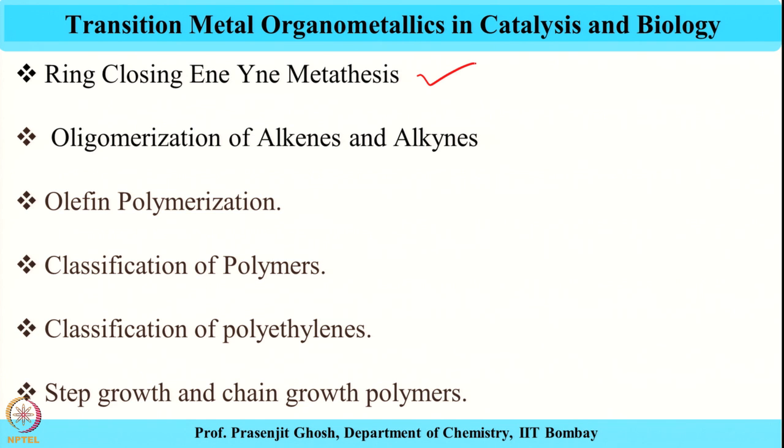We then looked into oligomerizations of alkynes, alkenes, and alkynes, including the SHOP (Shell Higher Olefin Process) catalysis. The development of the SHOP catalyst addressed an industrial problem through need-based development, combining three organometallic reactions — olefin oligomerization, olefin metathesis, and isomerization — for the singular goal of producing feedstock for detergents.